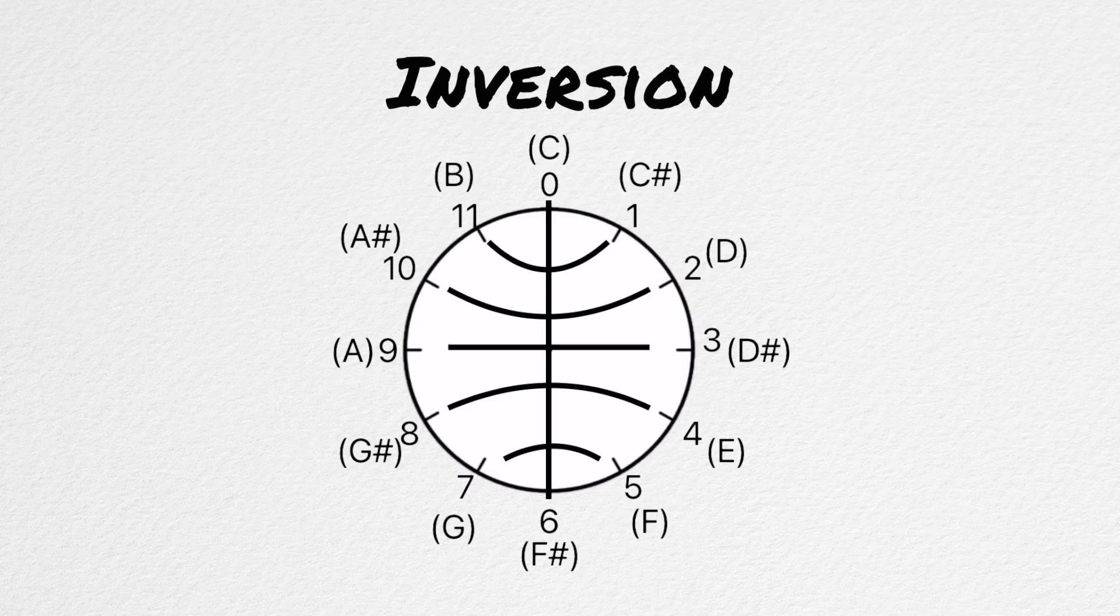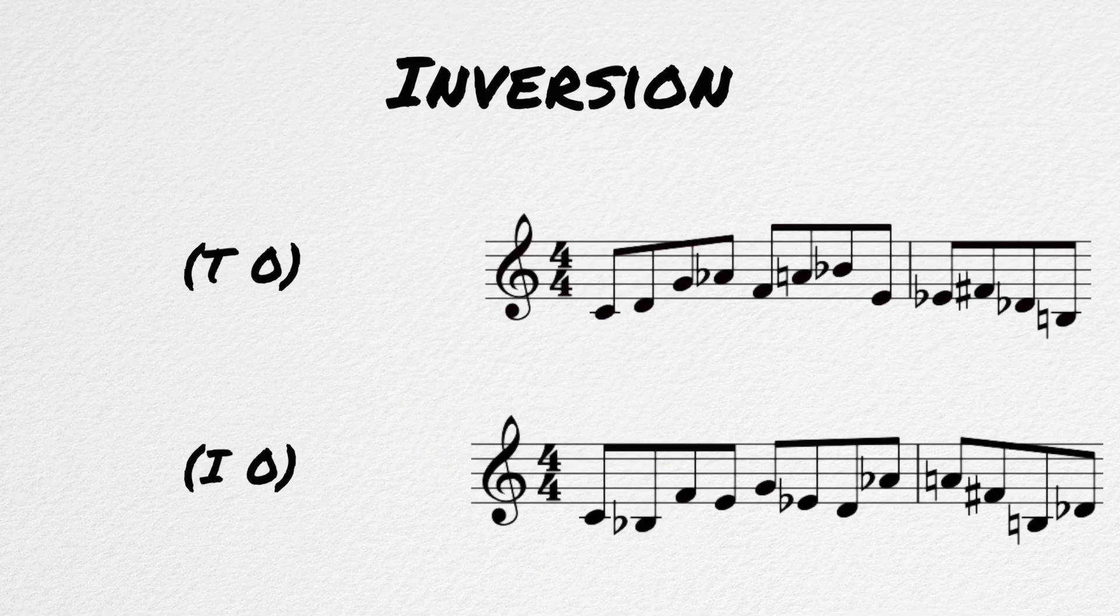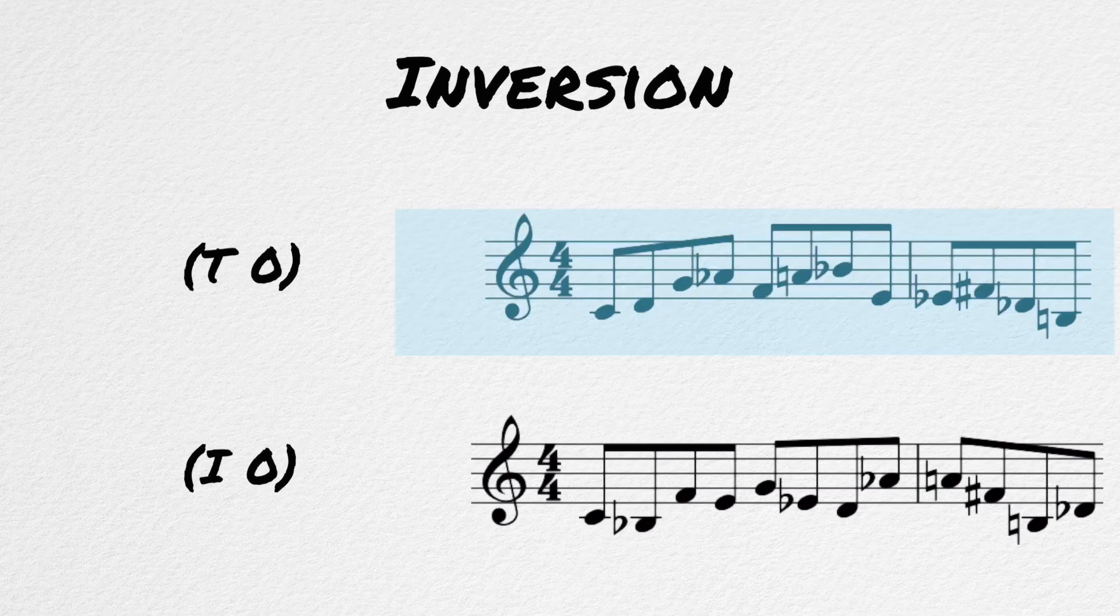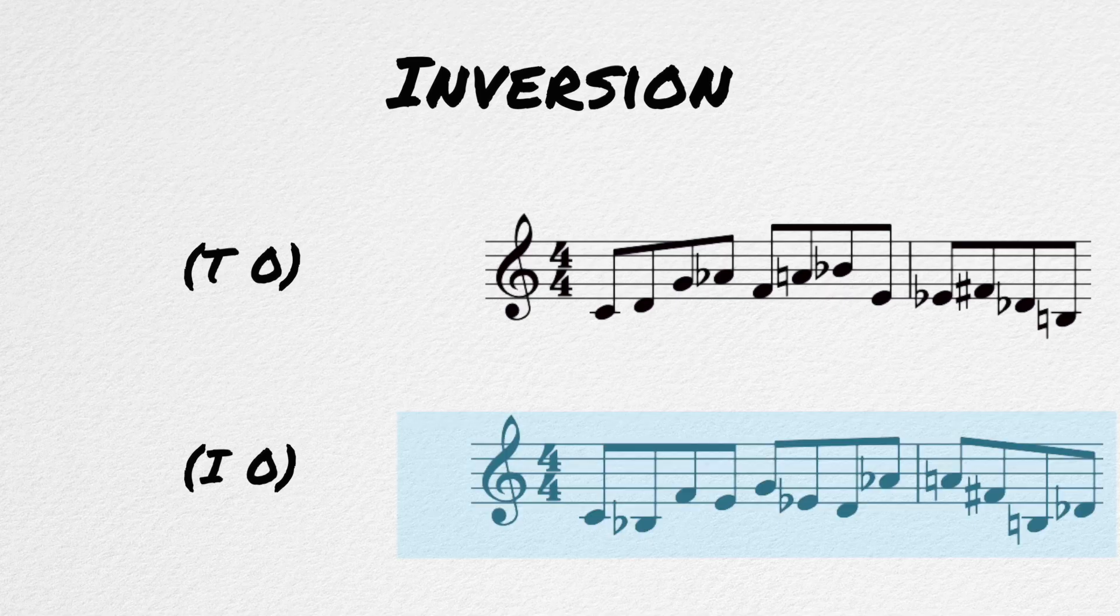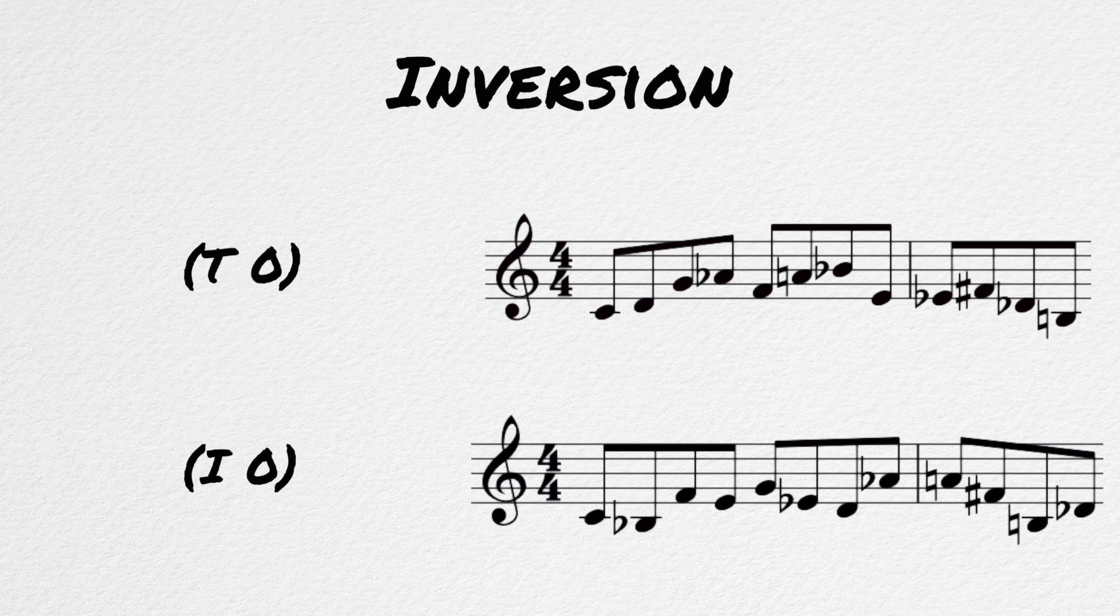0 equals 0, 1 equals 11, 2 equals 10, 3 equals 9, 4 equals 8, 5 equals 7, and 6 equals 6, and so on and so forth. So our R0 goes from this... To this... This will be labeled I0, or inversion 0.